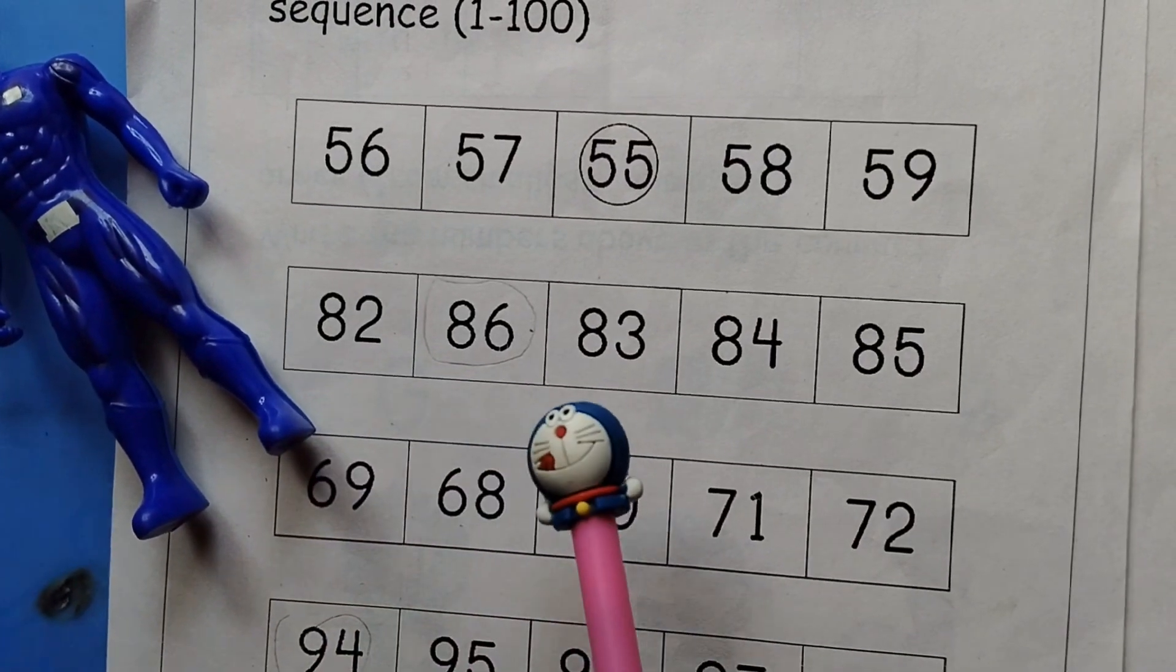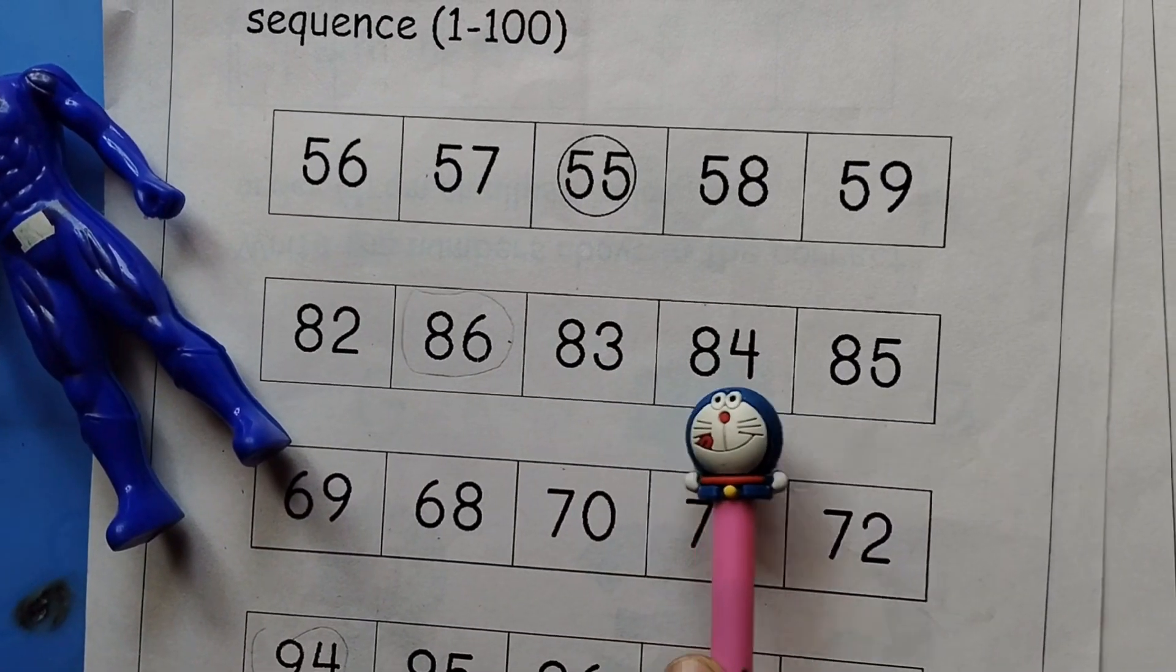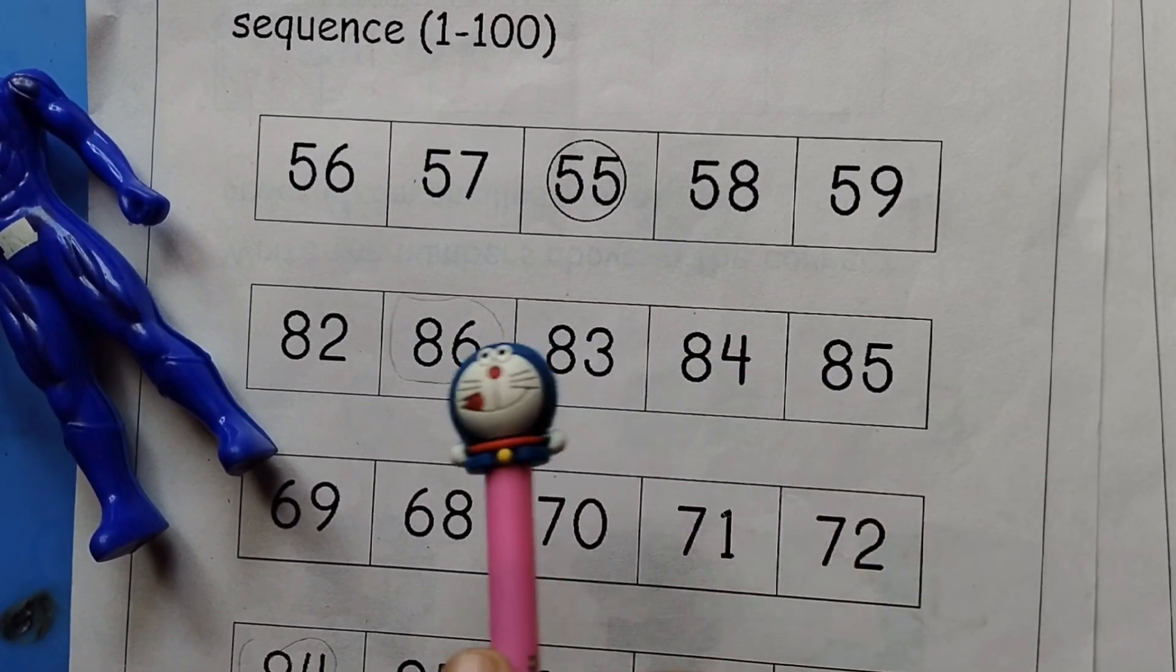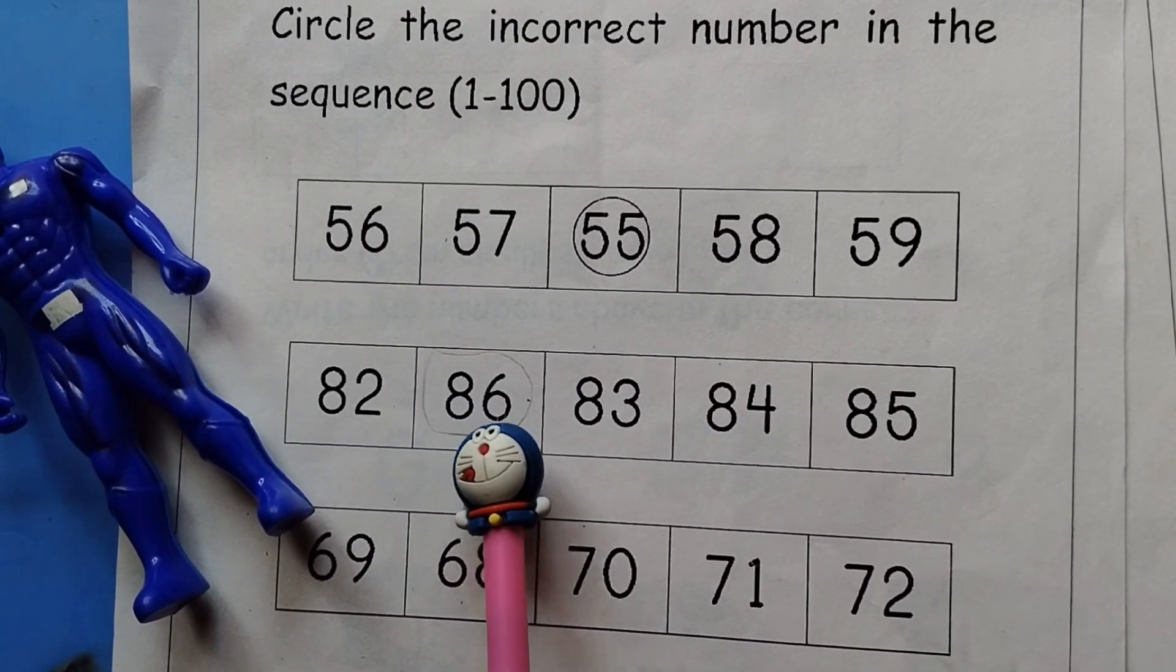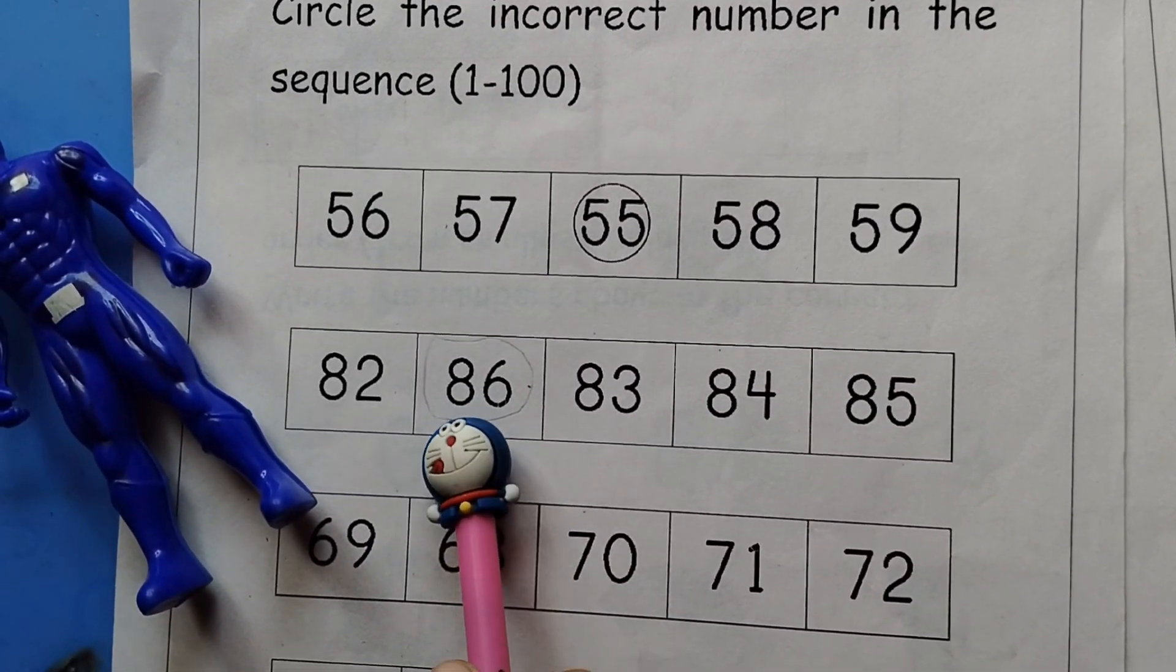82, 83, 84, 85. 86 is the incorrect number in the sequence.